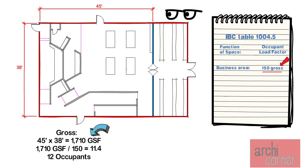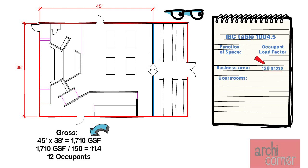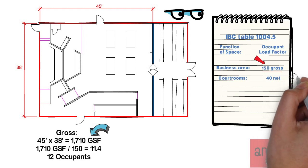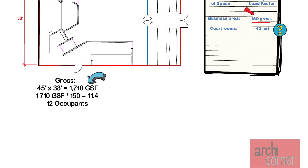However, you probably notice that this resembles a courtroom. That would mean that using the one occupant per 150 square foot load is incorrect. In the table, there is a section for courtrooms, and that section calls out for one occupant per 40 net square feet. So what does that mean — how do we get net?